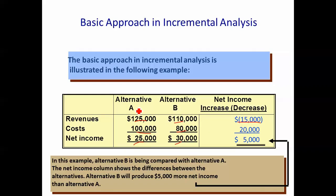Comparing B to A, the revenue difference is negative 15,000, so we bracket it — B is getting less revenue than A. When it comes to costs, A's costs are 100,000 and B's costs are 80,000, so there's a benefit to B of 20,000. Basically, we forego revenue of 15,000 but we also save 20,000. The net incremental effect is that alternative B is better than alternative A by $5,000.